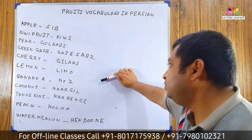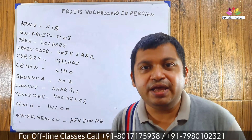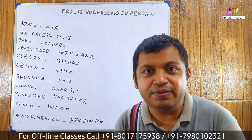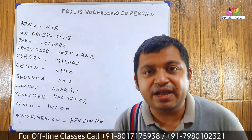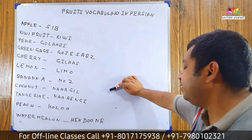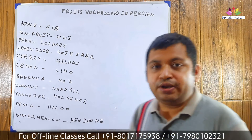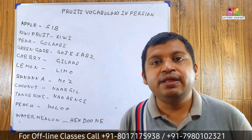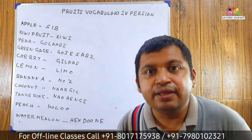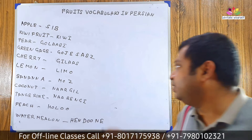Banana: Mooz. Let's pronounce it with me: Banana Mooz. Come to the next word. Coconut: Nargil. Let's pronounce it with me: Nargil. Let's move to the next word.